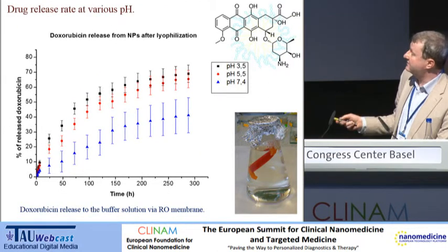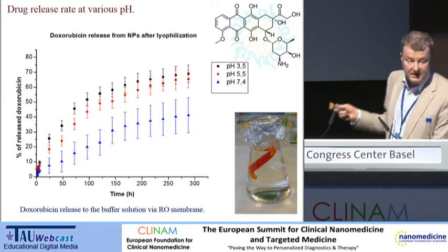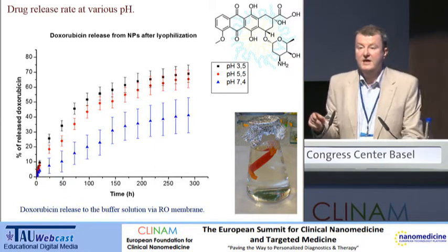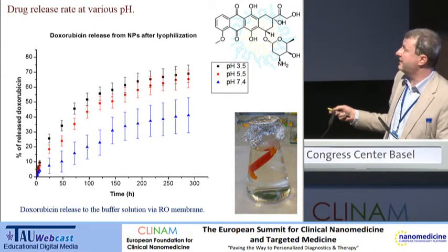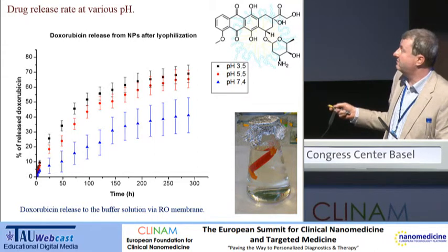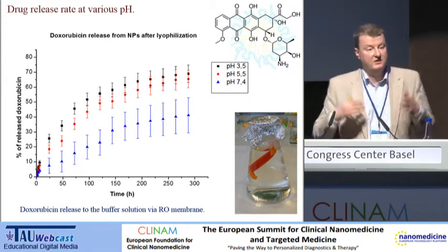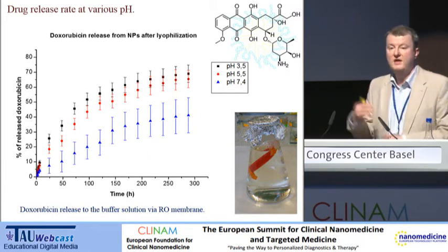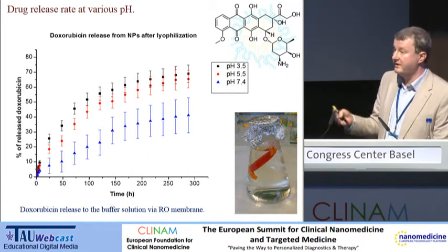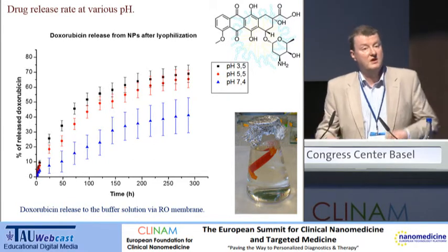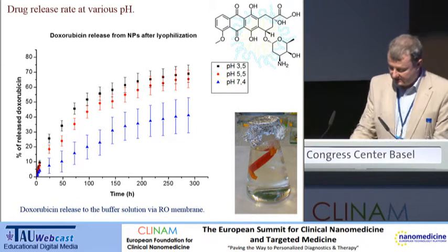How is the release? At neutral pH, we have a fairly slow release — it is 300 hours for about 50% release. But when the surrounding conditions become acidic, the release rate speeds up. We think that in early endosomes and late endosomes, you can have fairly acidic conditions, so drugs will be released much quicker. We want to avoid drug release in the circulation and speed it up inside the cancerous cells.